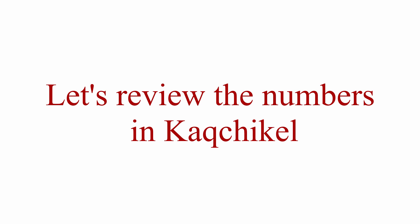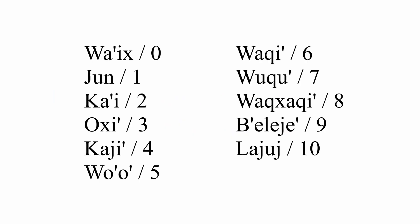Okay, so now let's review the numbers that we learned in Kaqchikel from 0 to 10. Let's go. WAISH — 0. HUNG — 1. KAUI — 2. OSHI — 3. KAI — 4. KAI — 5. WAQUI — 6. WAQUI — 7. WAQUI — 8. WAQUI — 9. PELEGHE. LAQUI.